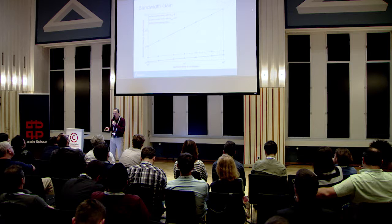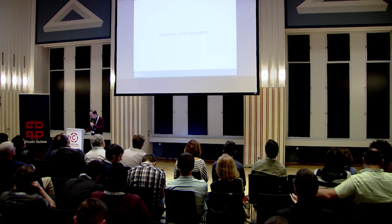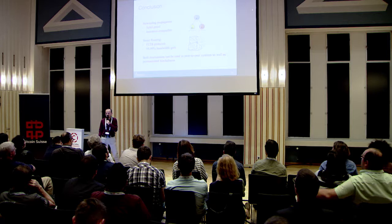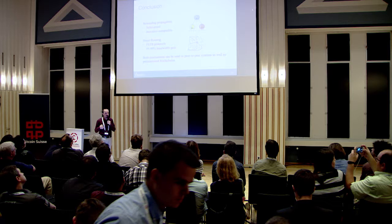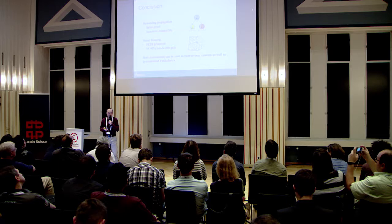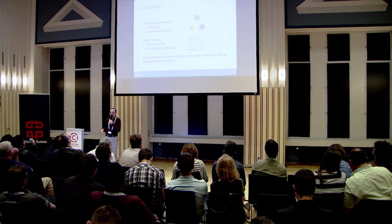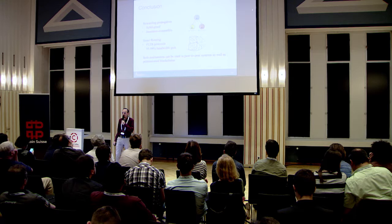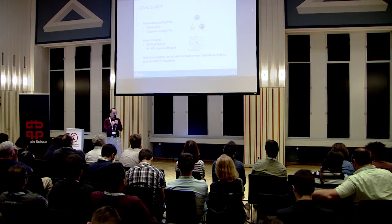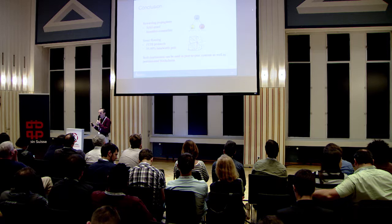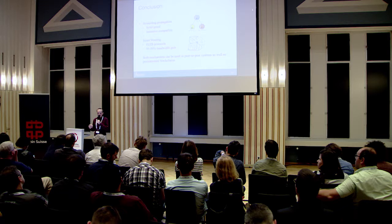To summarize: we analyzed transaction propagation in permissionless networks, analyzed the sybil-proofness and incentive compatibility problems, and constructed a fee-sharing function providing these characteristics. We also proposed a smart routing mechanism that increases bandwidth efficiency for transaction advertisement. Both schemes can also be used in permissioned blockchains, but for permissionless blockchains the incentive part is a must, while the routing mechanism is beneficial for efficiency.